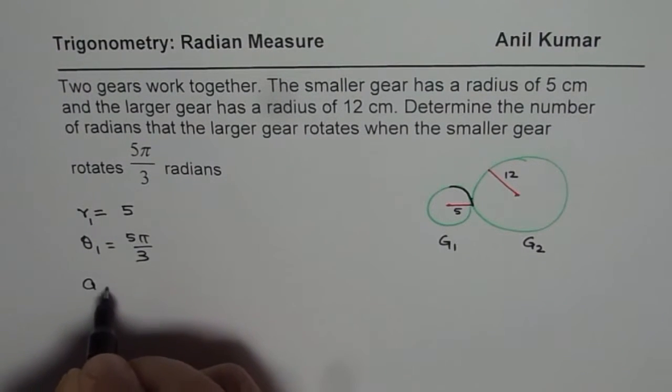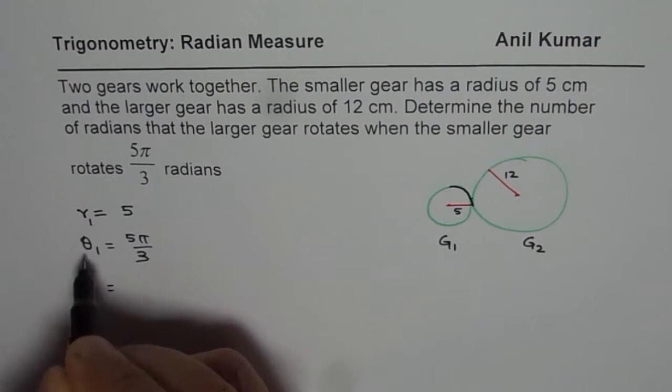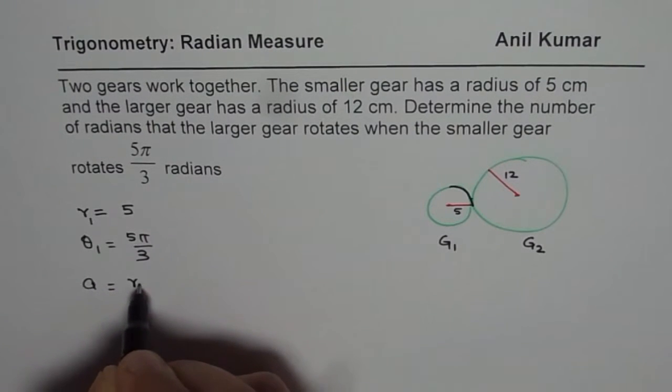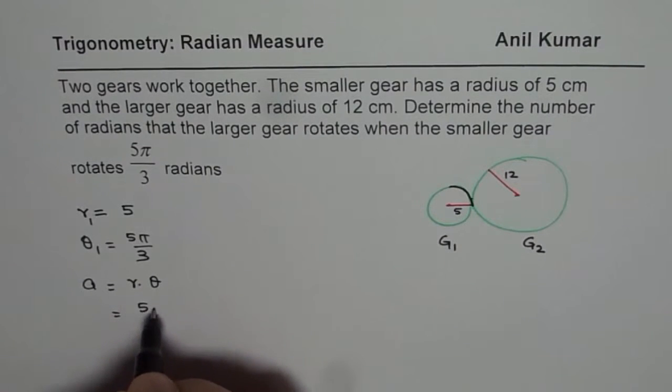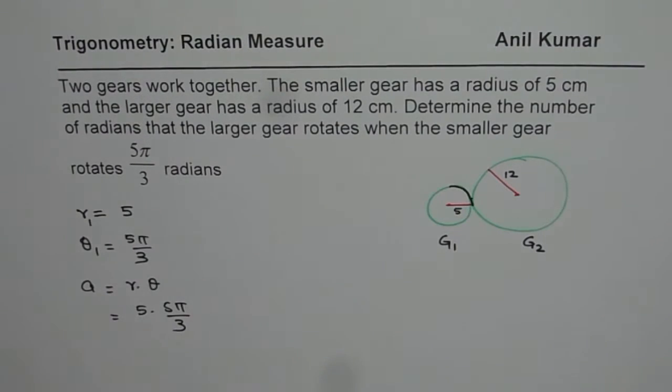So the arc A is r times θ. So that arc is 5 times 5π/3. So that is the arc length.